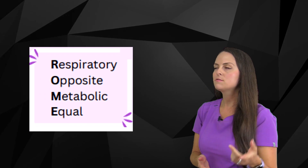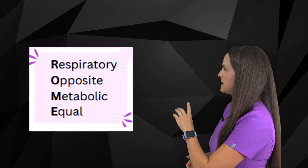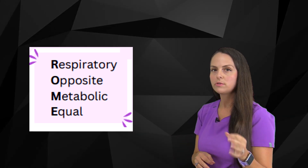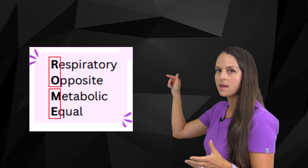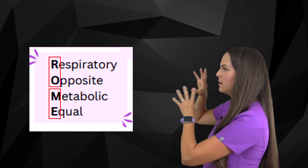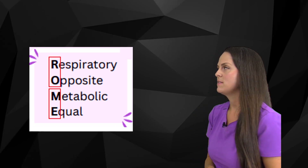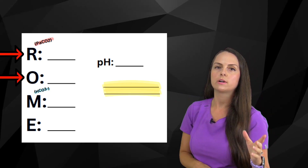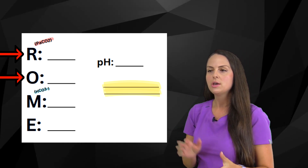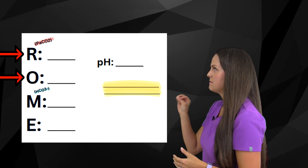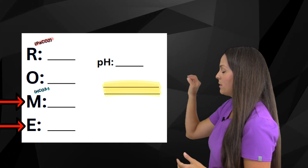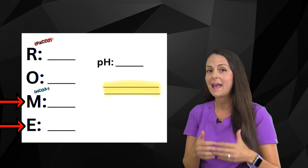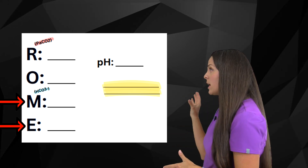ROAM is an acronym that stands for Respiratory Opposite, Metabolic Equal. Whenever you're using this method, I really recommend that you keep the R and the O together and the M and E together. R and O means respiratory opposite — when we're talking about respiratory, we're talking about the PaCO2, so that lab value goes with this part of the acronym. M and E is metabolic equal, and the lab value we're looking at is the bicarb, the HCO3.